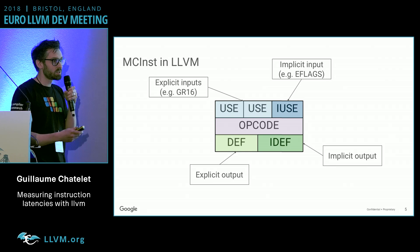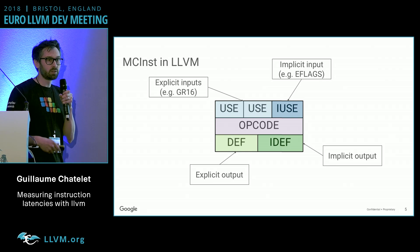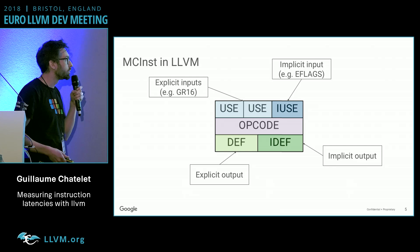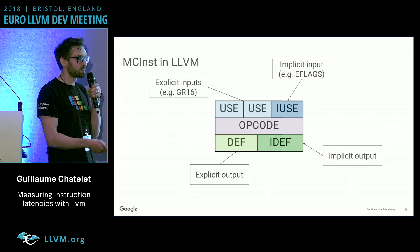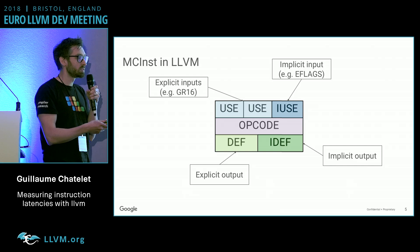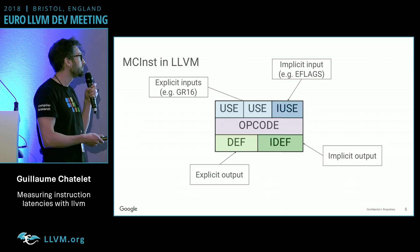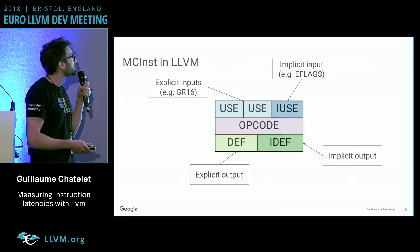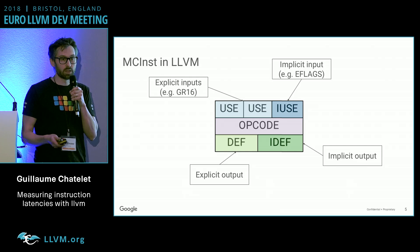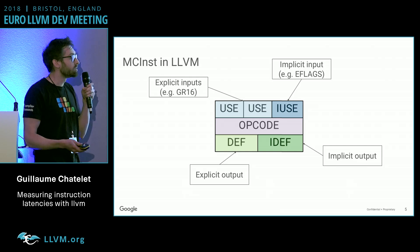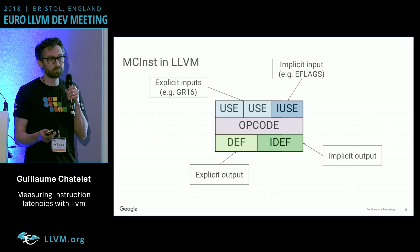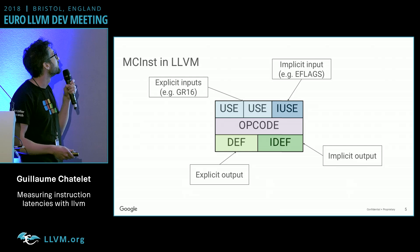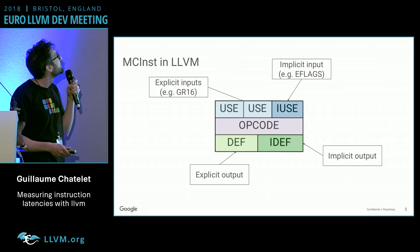Just a few words on this diagram I'll be using on the next slides — it represents an instruction. The opcode is in the middle. It has inputs, called uses in LLVM, and defs, which are the outputs. There are two kinds: some are explicit, where you need to pick a value for them, and some are implicit, where you don't get to choose. Dark colors are implicit, and lighter ones are explicit.